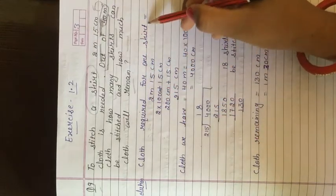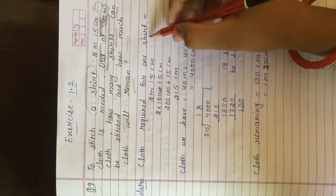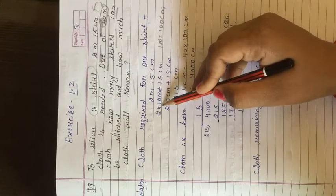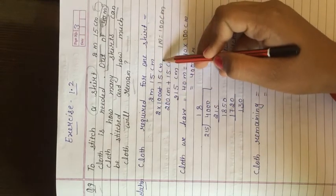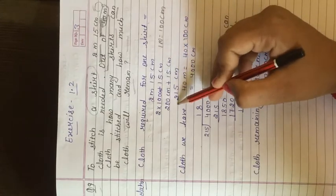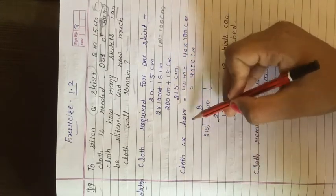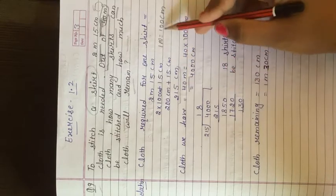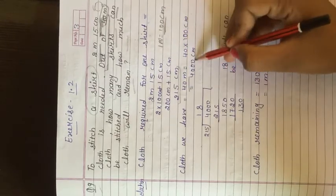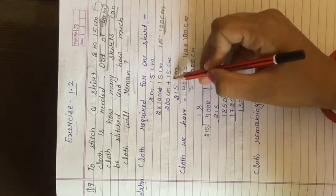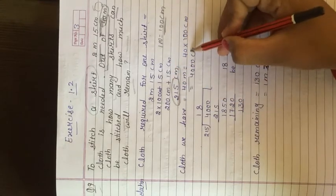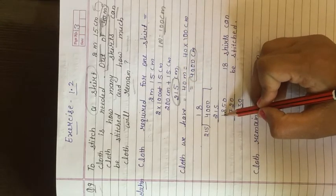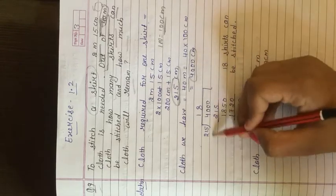Cloth required for one shirt: 2 meter 15 centimeter. Convert to centimeter. One meter equals 100 centimeter. 2 into 100 plus 15 equals 215 centimeter. Cloth we have: 40 meter, convert to centimeter, 40 into 100 equals 4000 centimeter. 215 for one shirt, 4000 total cloth. Divide 4000 by 215 to find how many shirts can be made.